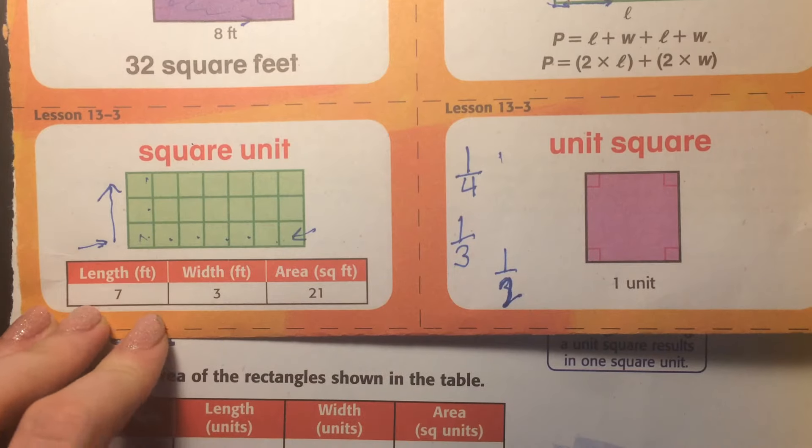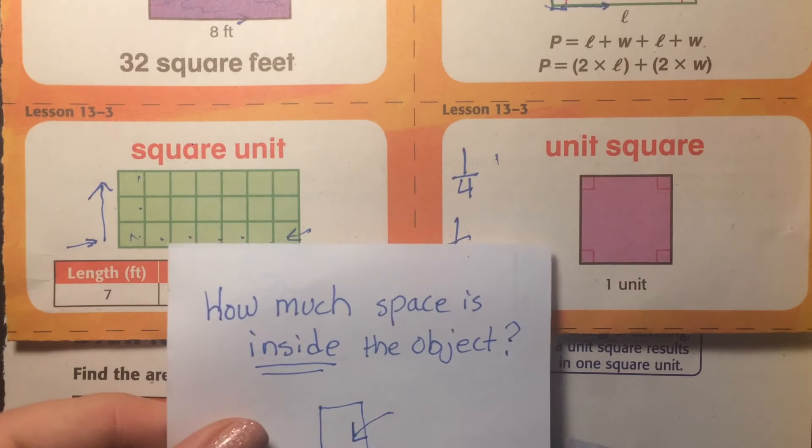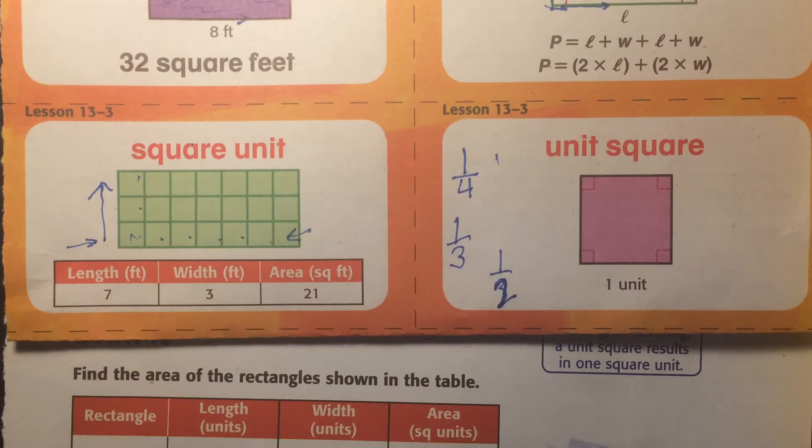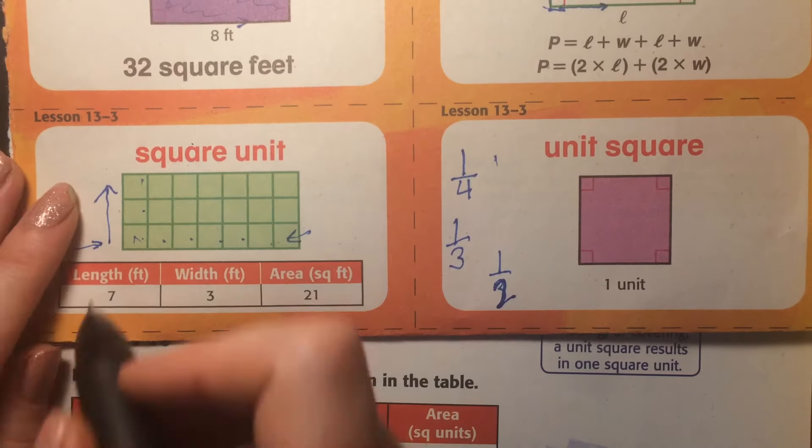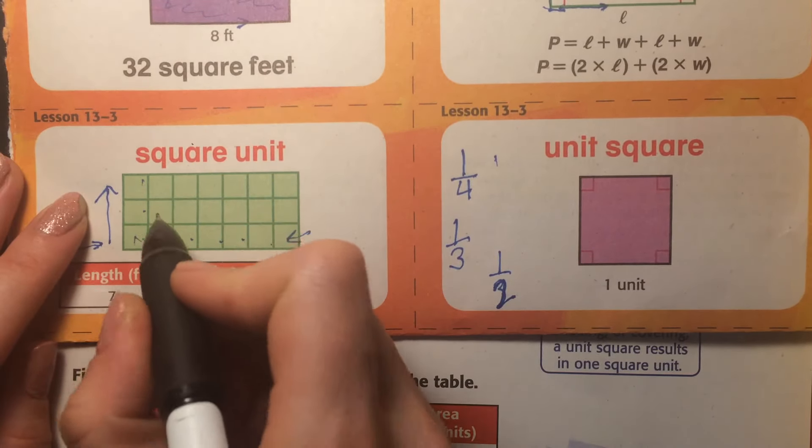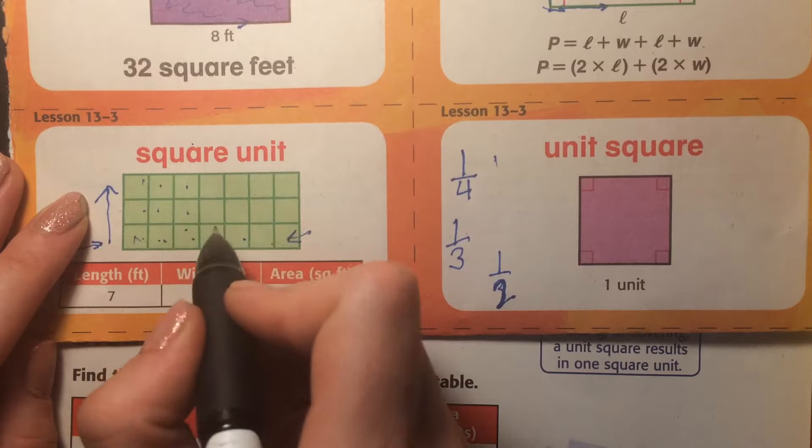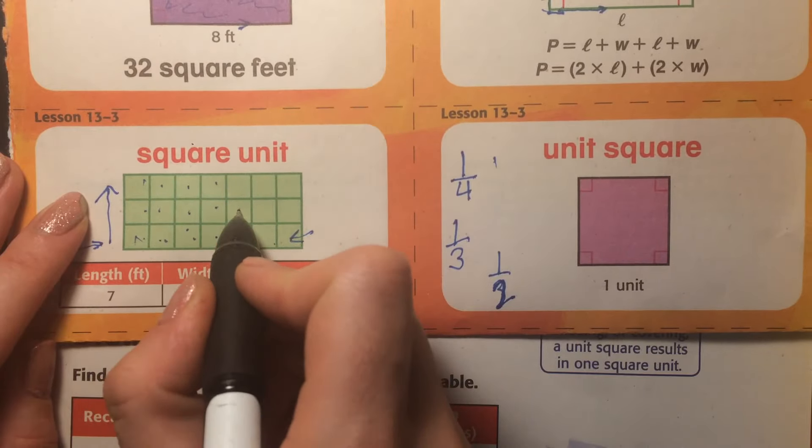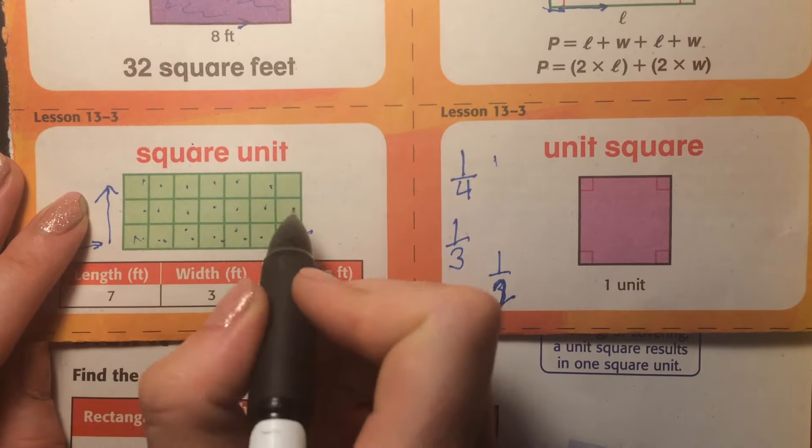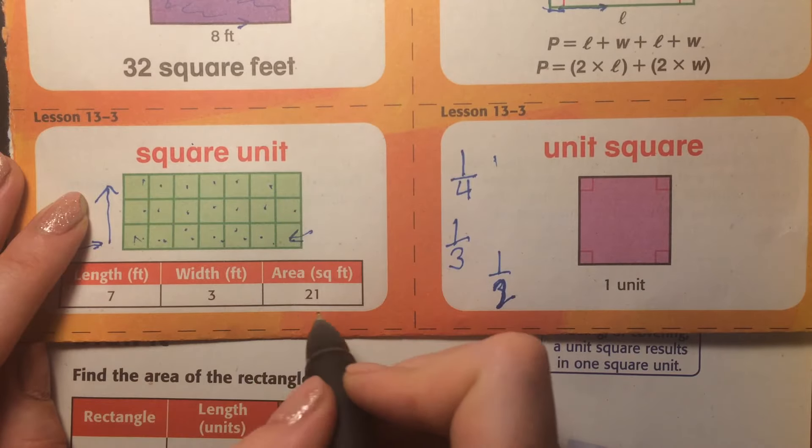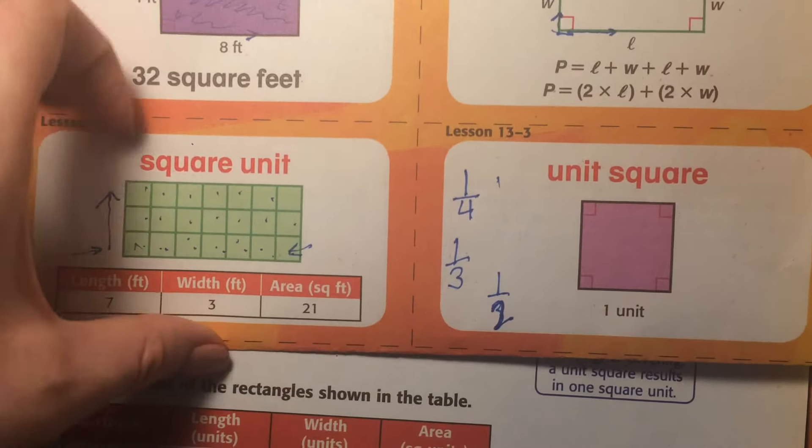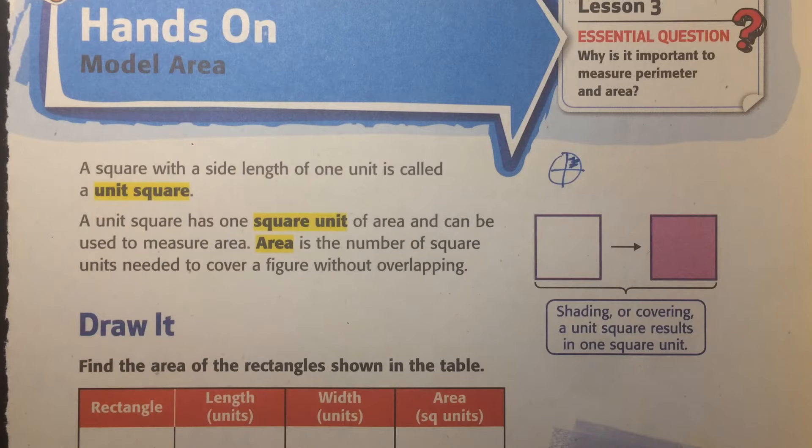So area, again, is how much space is inside. So how much is covered. So we can count one, two, three, four, five, six, seven, eight, nine, 10, 11, 12, 13, 14, 15, 16, 17, 18, 19, 20, 21. And that is the area, 21.